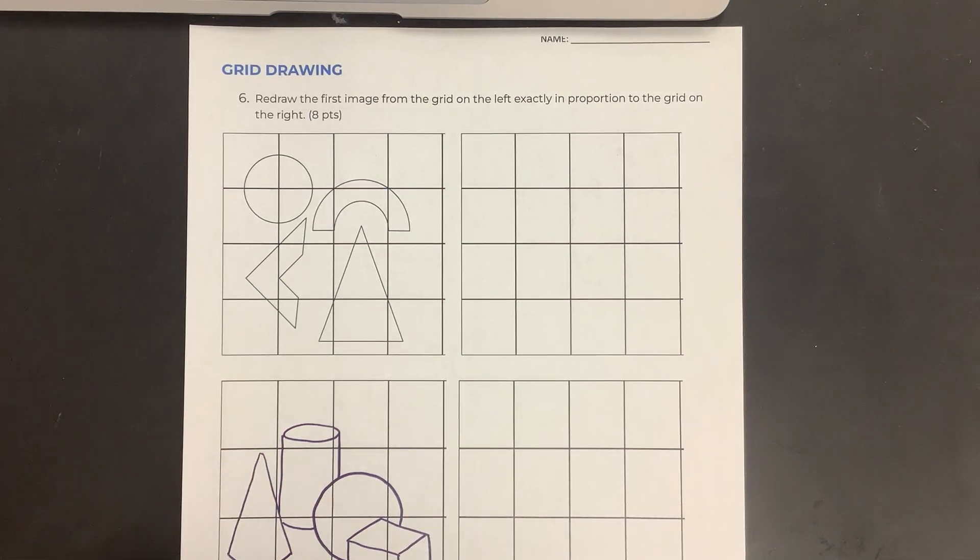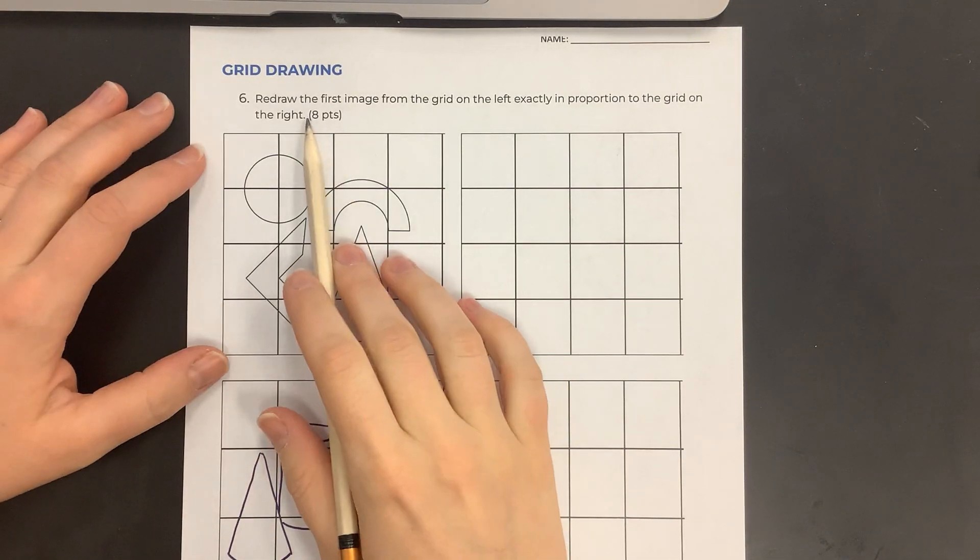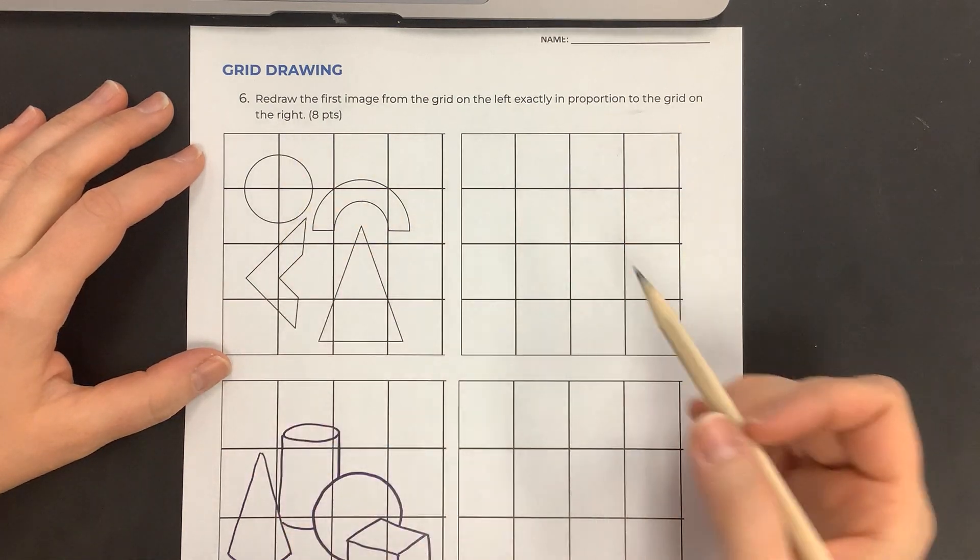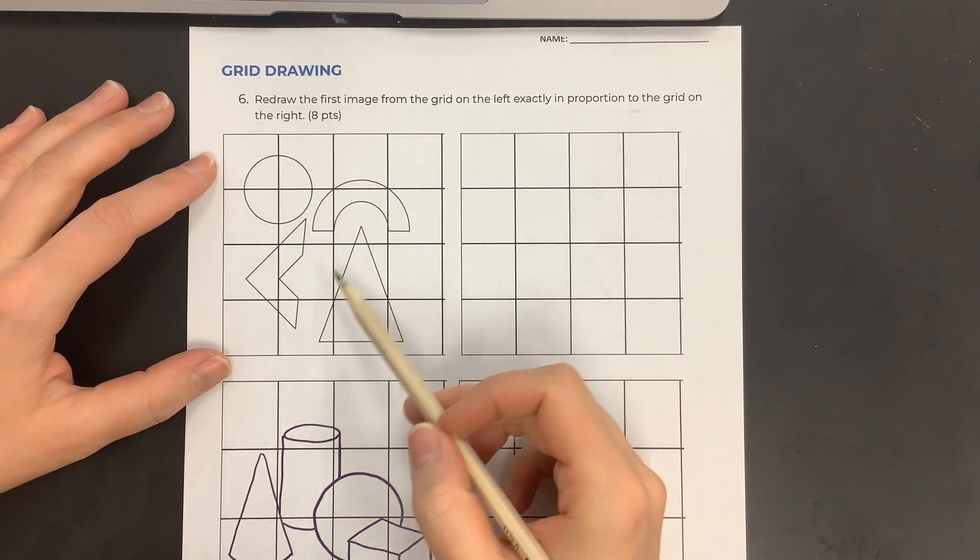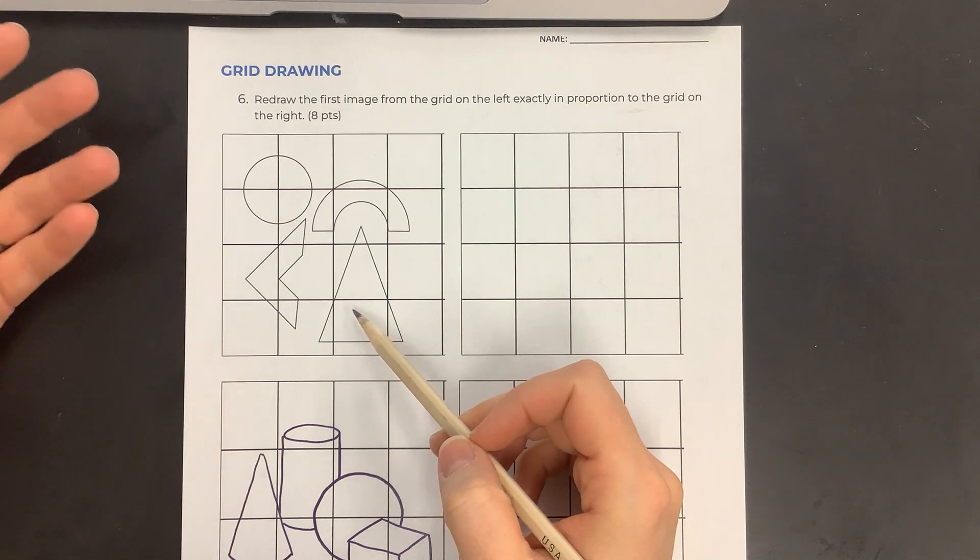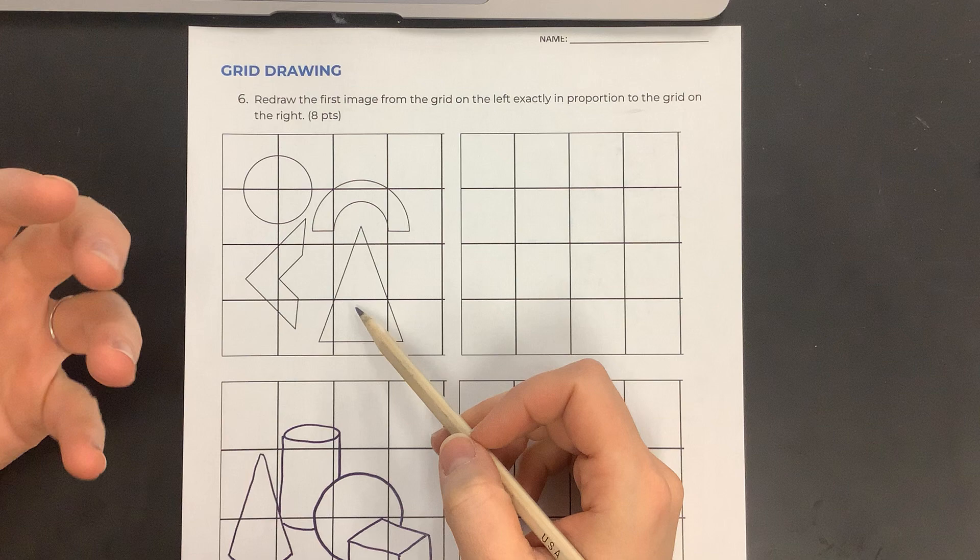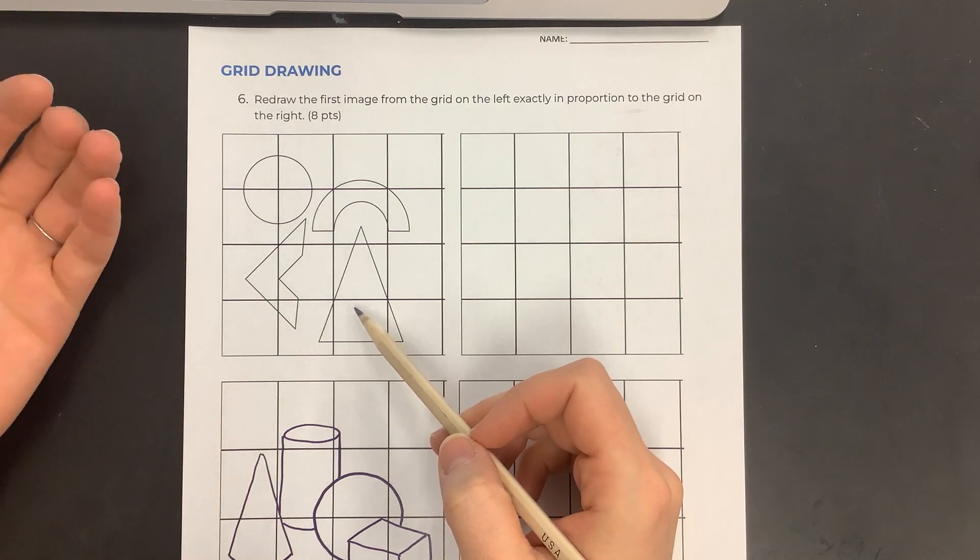Today we're going to be learning how to do a grid drawing. The directions say we're going to redraw the first image from the grid on the left exactly in proportion to the grid on the right. This one I'm going to help you with just to teach you how you can do the grid method. It's just a tool that we use in drawing to help us draw more accurately.